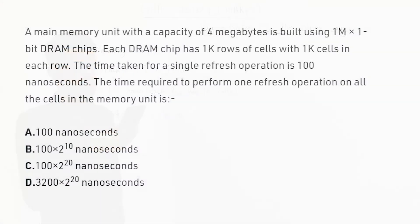The main memory unit with a capacity of 4 megabytes is built using 1M x 1 bit DRAM chips. Each DRAM chip has 1K rows of cells with 1K cells in each row. The time taken for single refresh operation is 100 nanoseconds. The time required to perform one refresh operation on all the cells in the memory unit is, then they have given you four options.